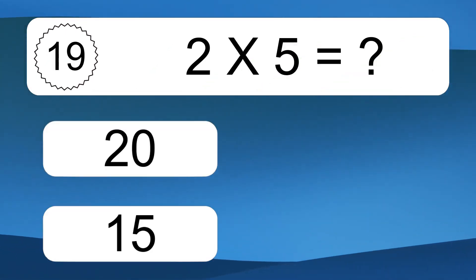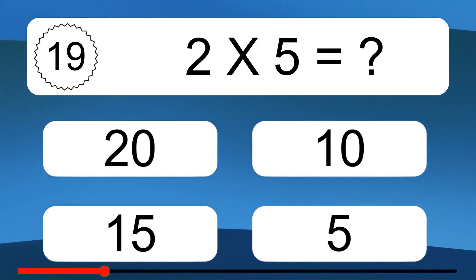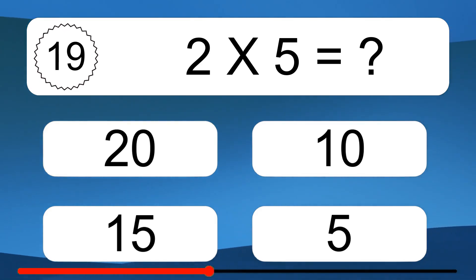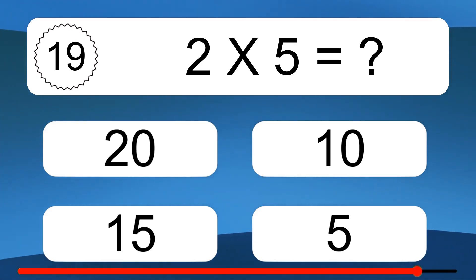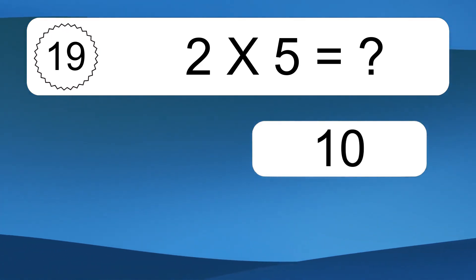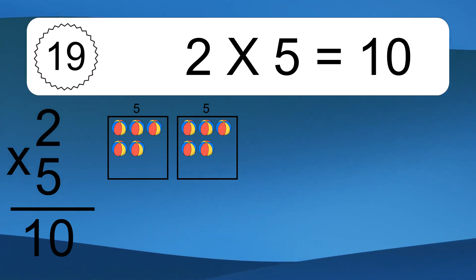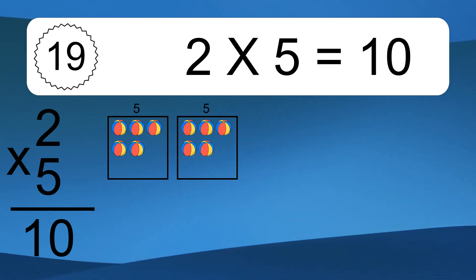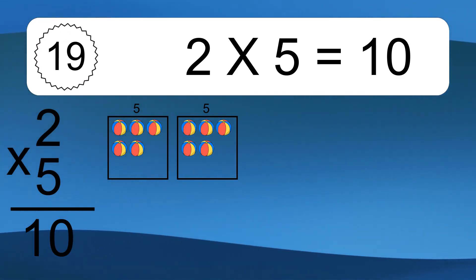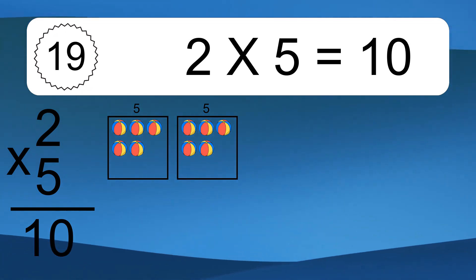2 times 5 equals what? 10. We have 2 boxes and each box has 5 colorful balls inside. If you count all the balls in all the boxes together, you will have 2 times 5 balls. This equals 10 balls.